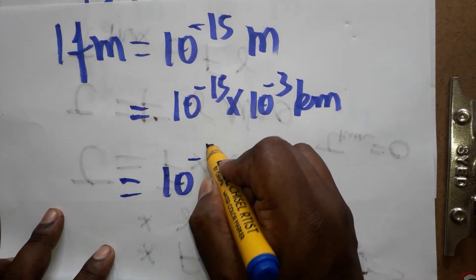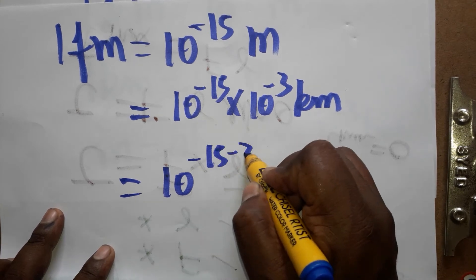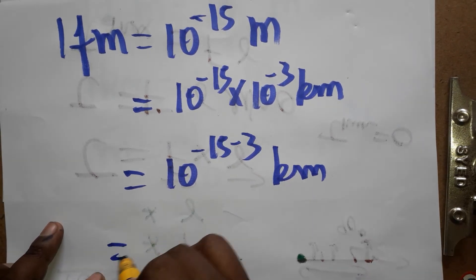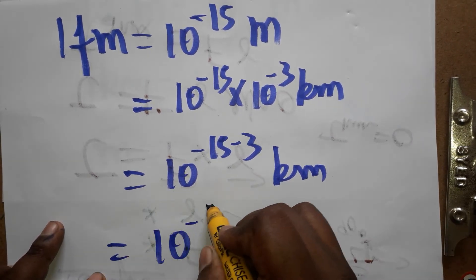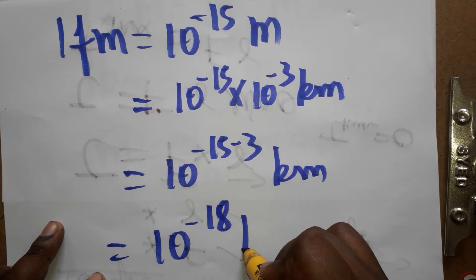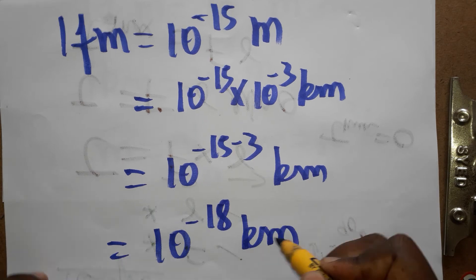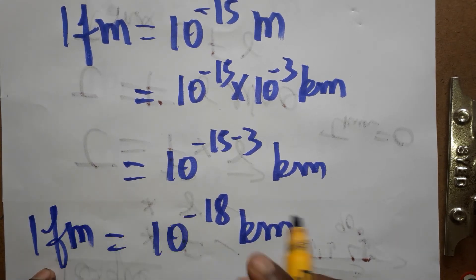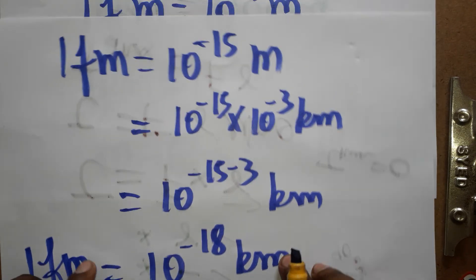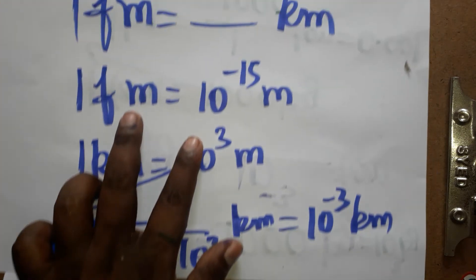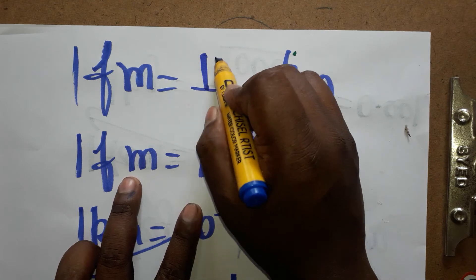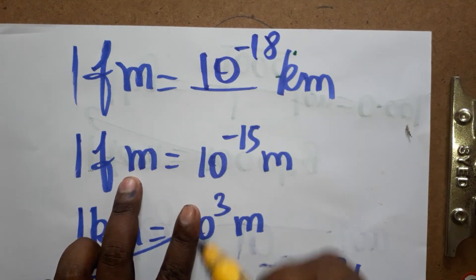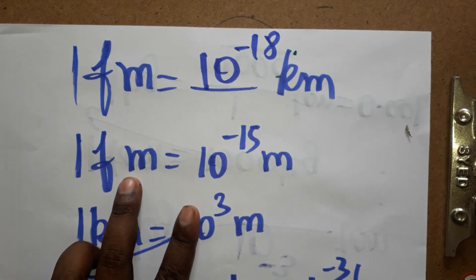We get 10 power minus 15 minus 3 kilometer, which equals 10 power minus 18 kilometer. So one femtometer is 10 power minus 18 kilometer.